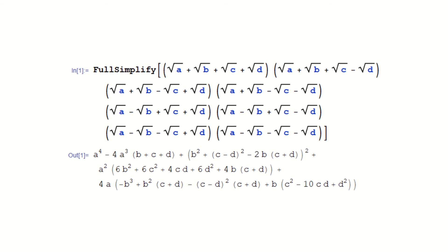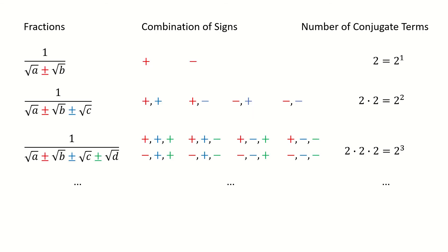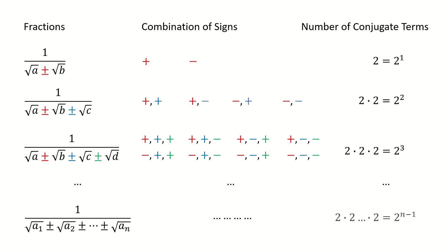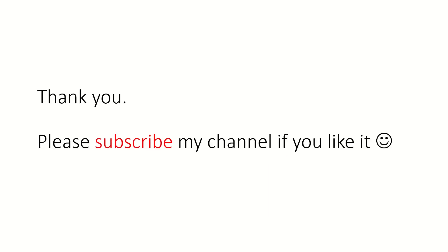Finally, for the arbitrary n-term case, we still follow this combination pattern, and the total number of conjugate terms will be 2^(n−1). That's all for today. Thank you for watching. Please subscribe to my channel if you like it.